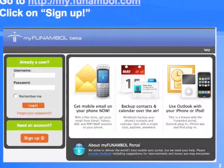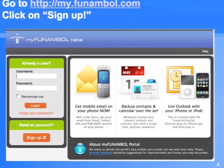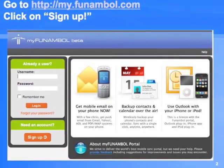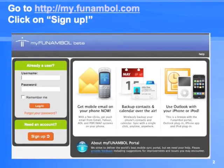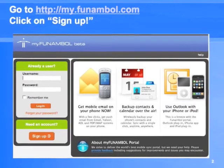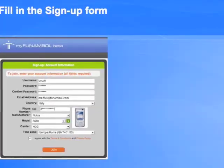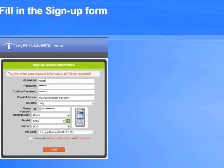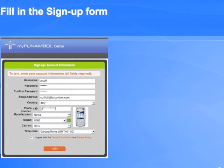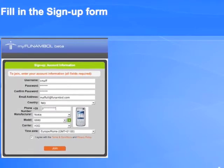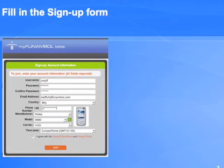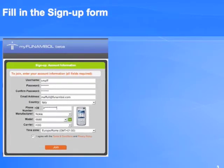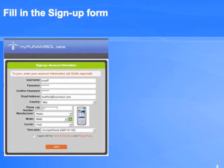The first thing you need is to get an account on my.funamble.com website. Go there and click on the sign up button. Fill in the form and make sure that you enter the correct email address and the correct phone number, because the portal will be using both of these to communicate with you.